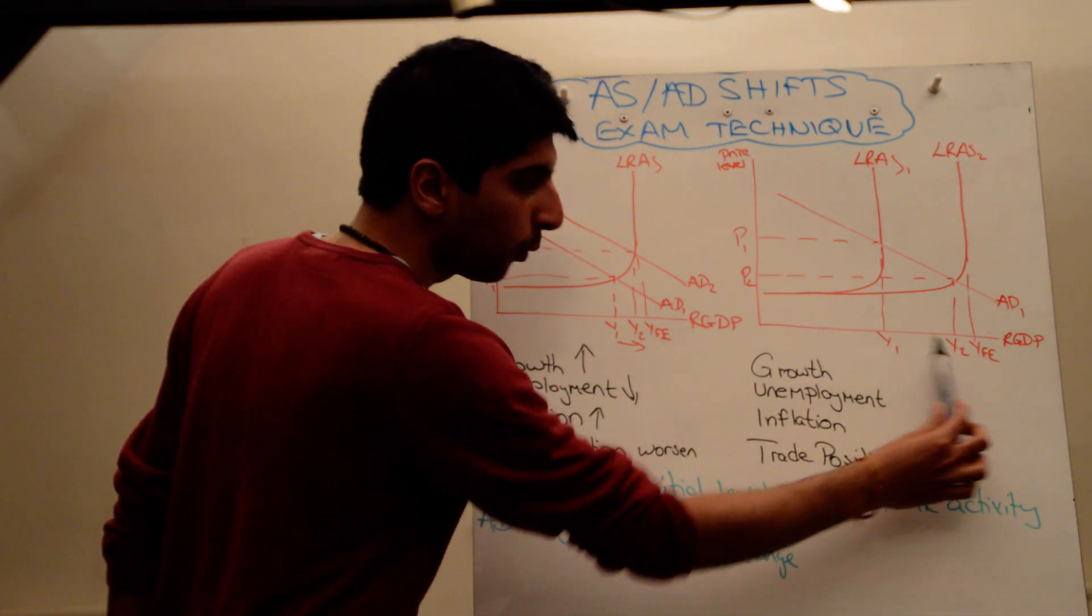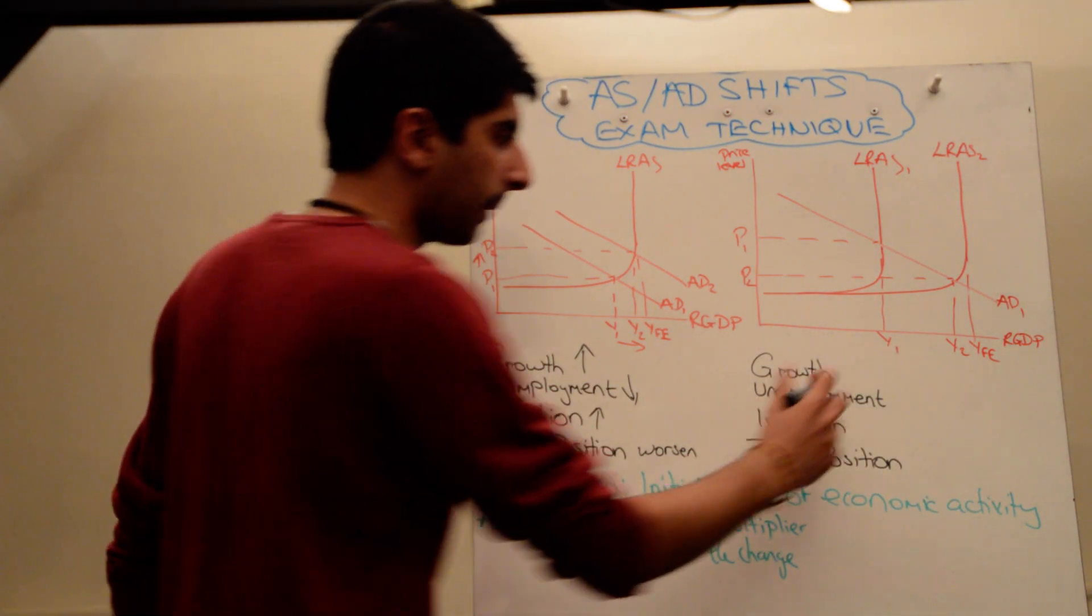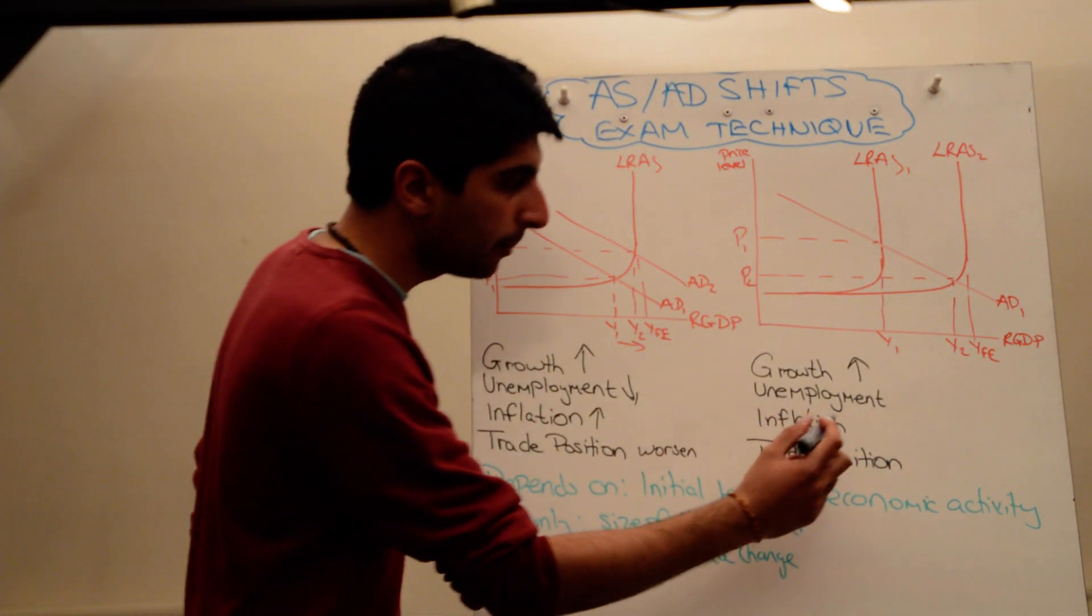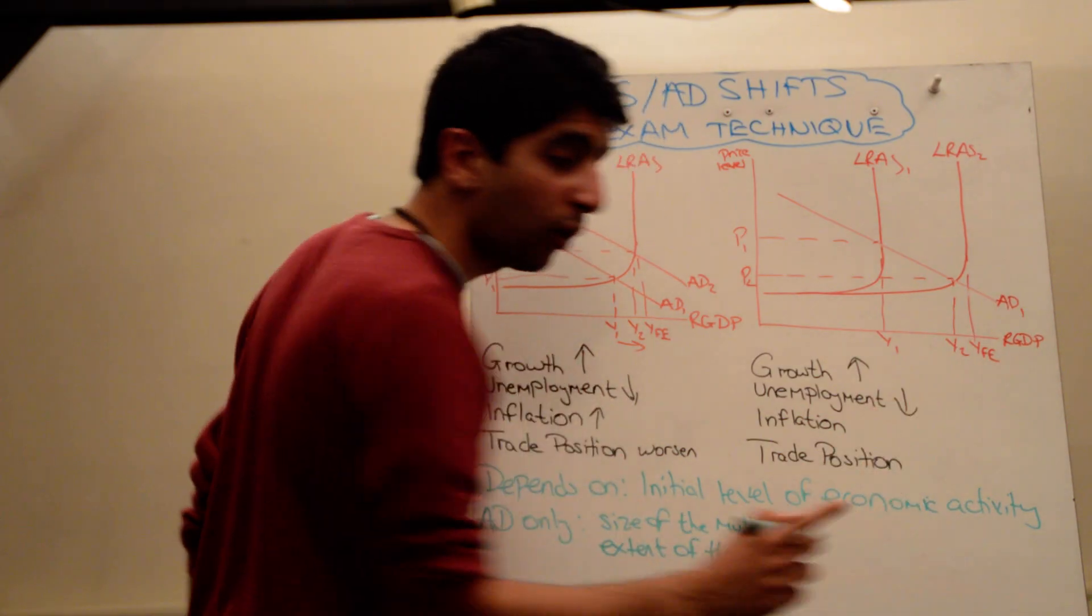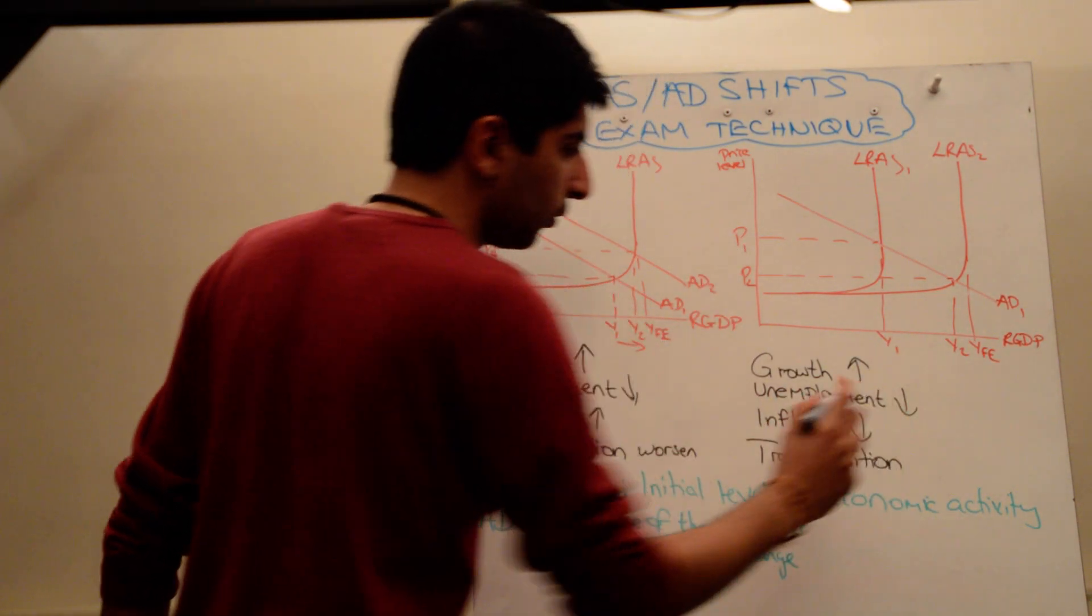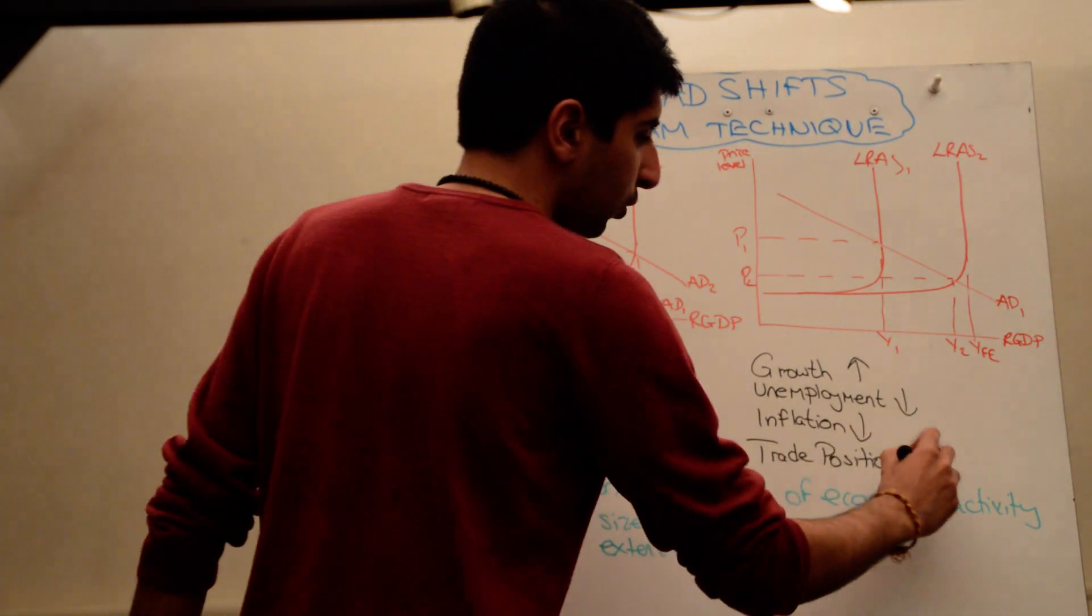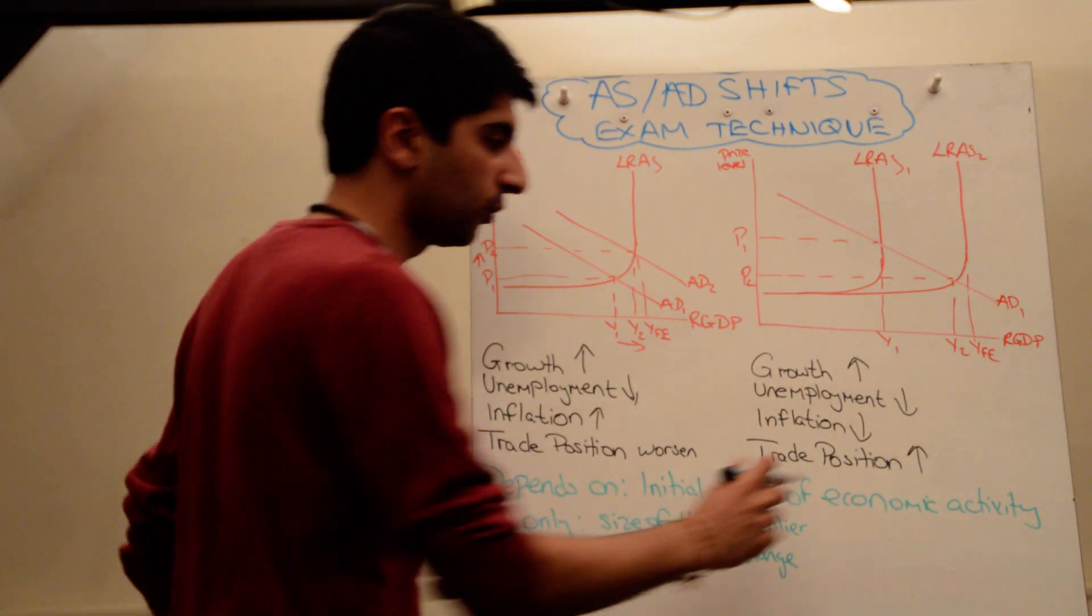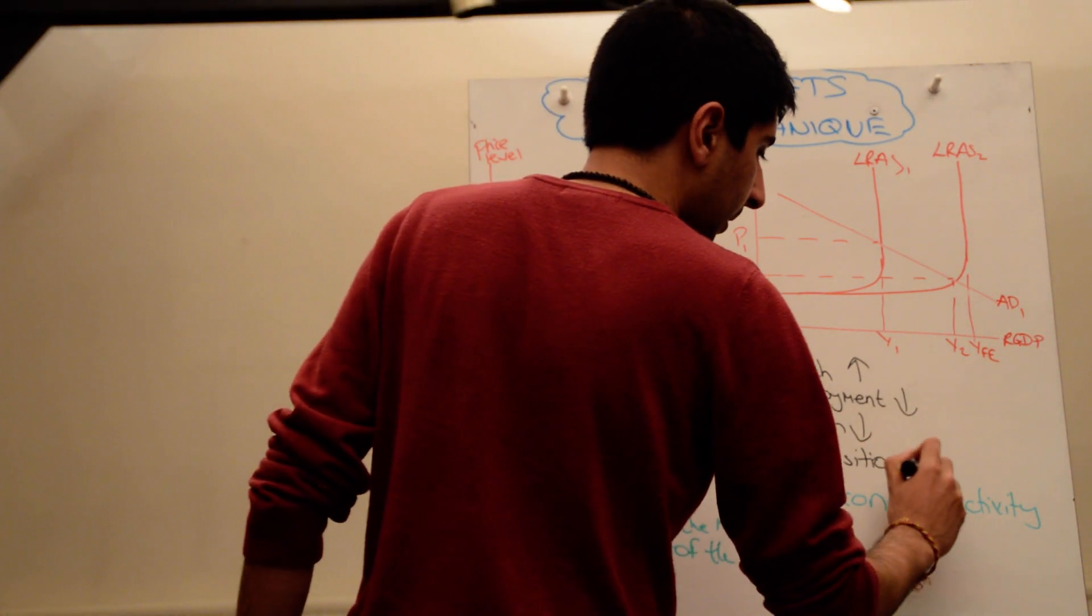Right, let's have a look, shall we? So what's going on with growth? You can see growth is increasing from Y1 to Y2. So yeah, there is an increase in growth. Happy days. What's going on with unemployment? Unemployment is falling. Hopefully now you can explain why. Inflation in the economy is falling. Great. And our trade position is actually improving. If you've gone to inflation to work that out, you're actually doing quite well. So trade position improves.